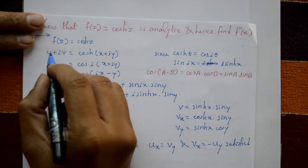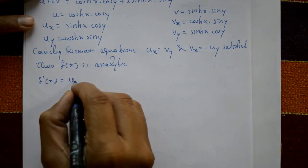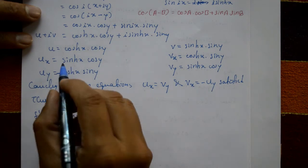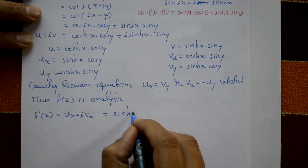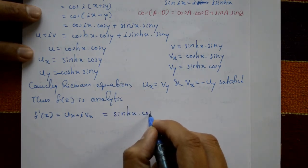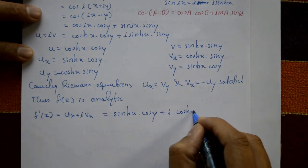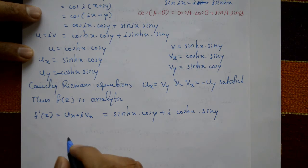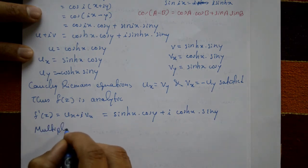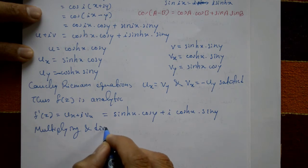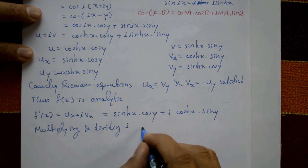Next, find f'(z). We have f'(z) = u_x + i·v_x. Now u_x = sinh(x)·cos(y) and v_x = cosh(x)·sin(y). So f'(z) = sinh(x)·cos(y) + i·cosh(x)·sin(y).